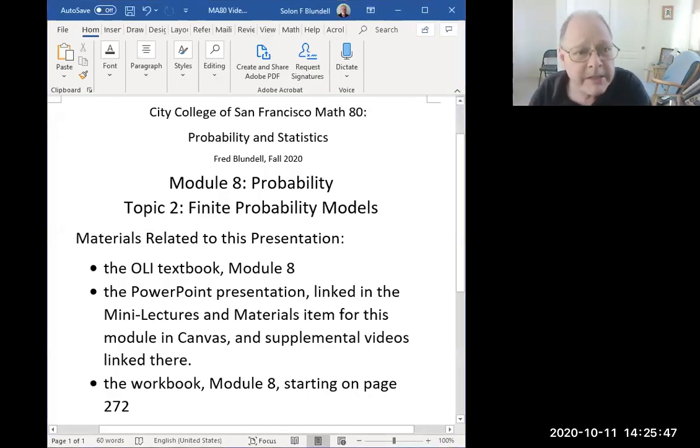This presentation is on Module 8 in the OLI textbook. It's about finite probability models. It's mostly vocabulary and a little bit of philosophy and context so you'll understand how we're thinking about probability.